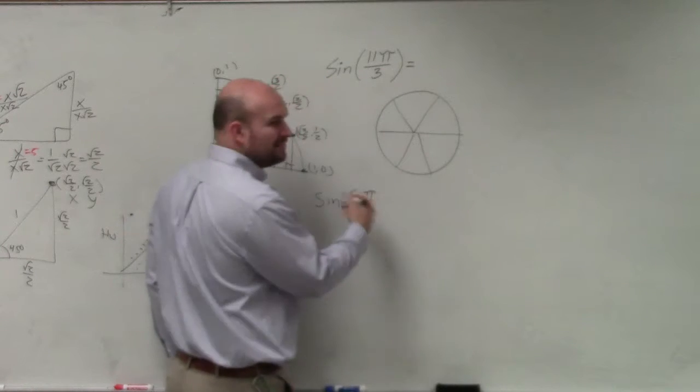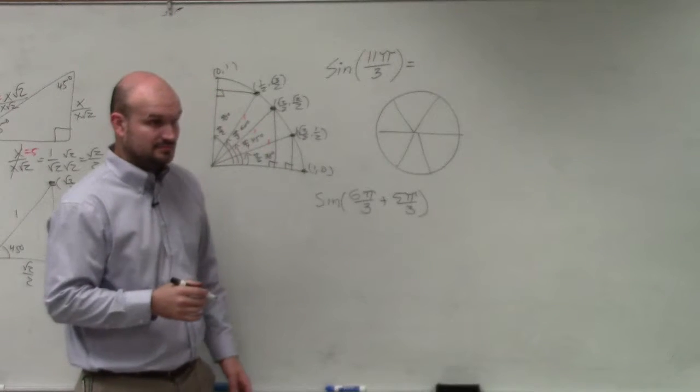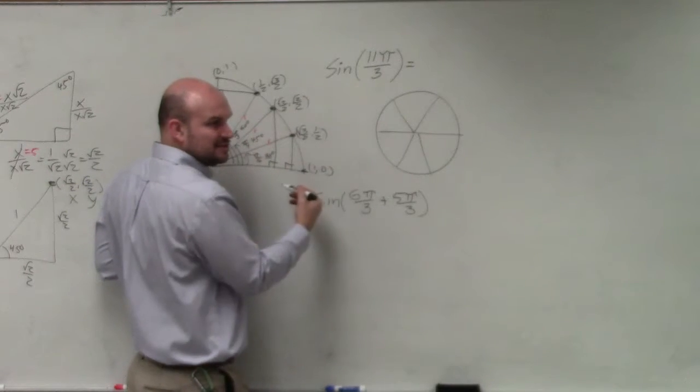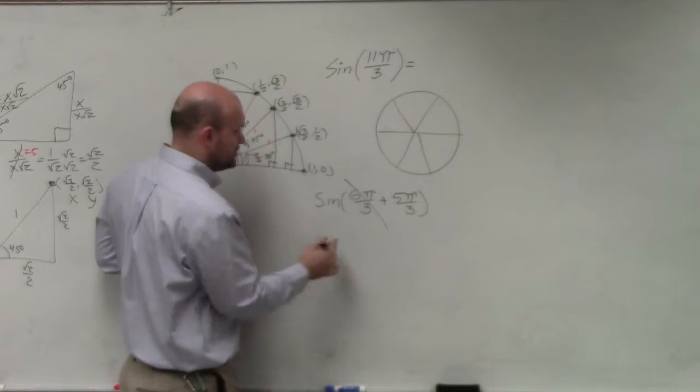6π/3. 6π/3, but then plus 5π/3, right? So this is just a circle. This is just a revolution around the circle, right? Just one of those extra revolutions. So it's not changing the initial and terminal side.